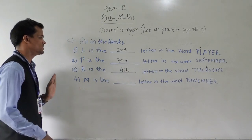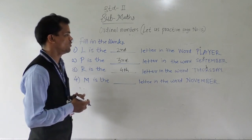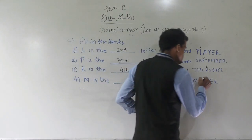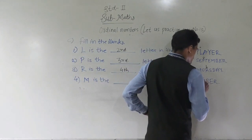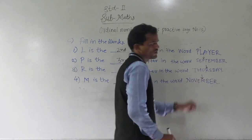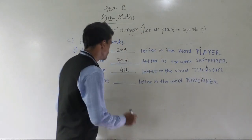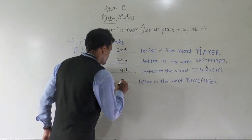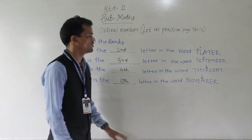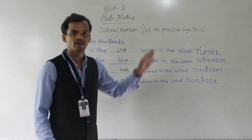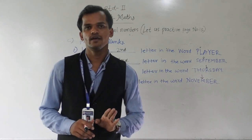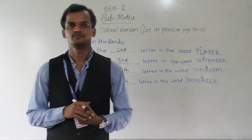Next: M is the blank letter in the word November. Where is the M? First, second, third, fourth, fifth — the position of M is fifth in the word November. So, the remaining examples you have to solve in your test book.